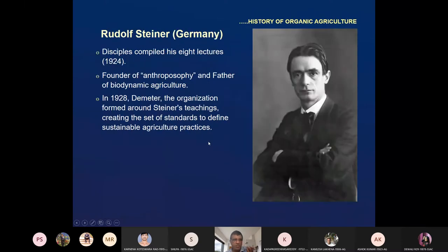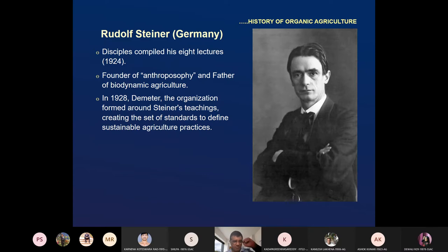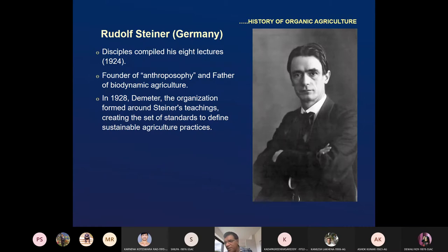Then we go to Rudolf Steiner in Germany. He gave the concept of biodynamic agriculture and delivered some lectures which were compiled by his disciples. He was the founder of Anthroposophy and father of biodynamic agriculture. In 1928, Demeter — the organization formed around Steiner's teachings — set standards to define sustainable agriculture practices. There are more than 3,000 variants of organic agriculture, and biodynamic agriculture is one of them.